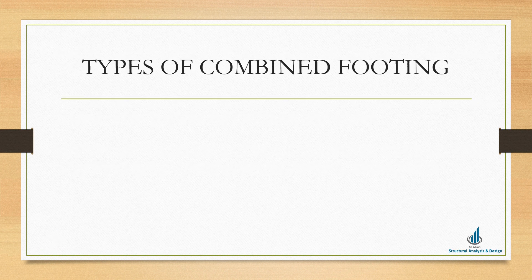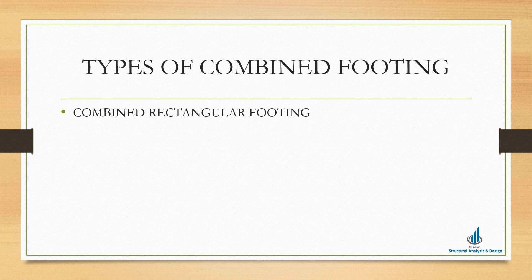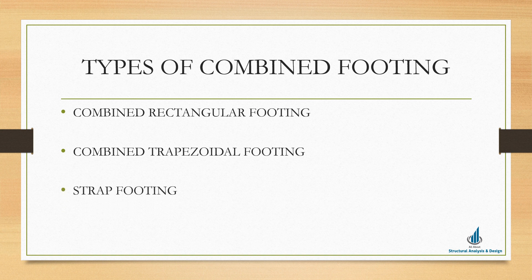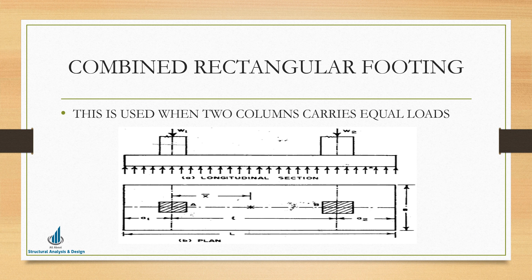Now, the different types of combined footing: first is combined rectangular footing, then combined trapezoidal footing, strap footing, and the last one is raft footing. Combined rectangular footing is used when two columns carry equal or almost equal loads. For example, if w1 and w2 are almost equal, we go for a rectangular footing. This looks like a rectangle — that's why it is called combined rectangular footing.